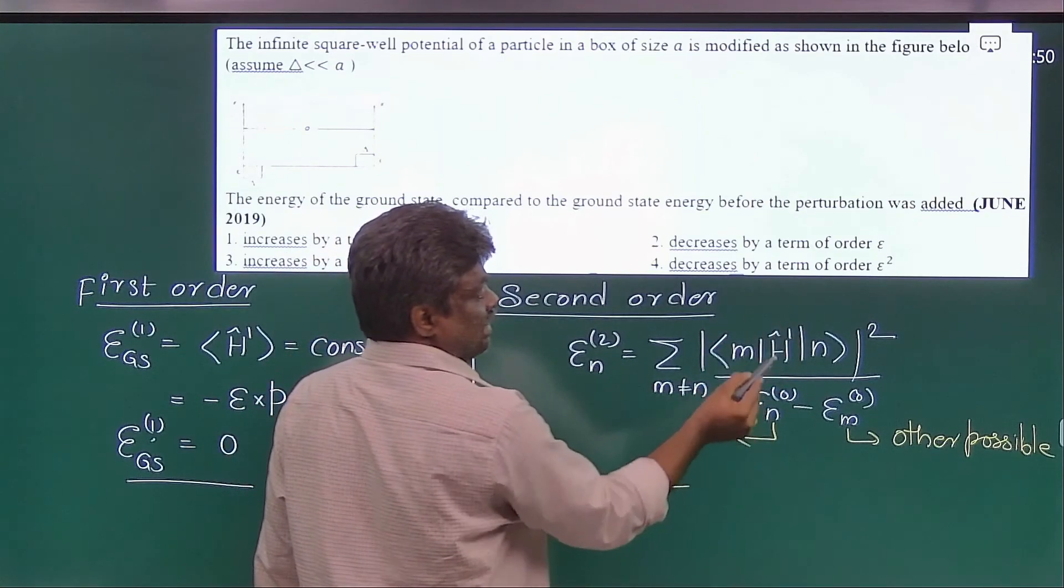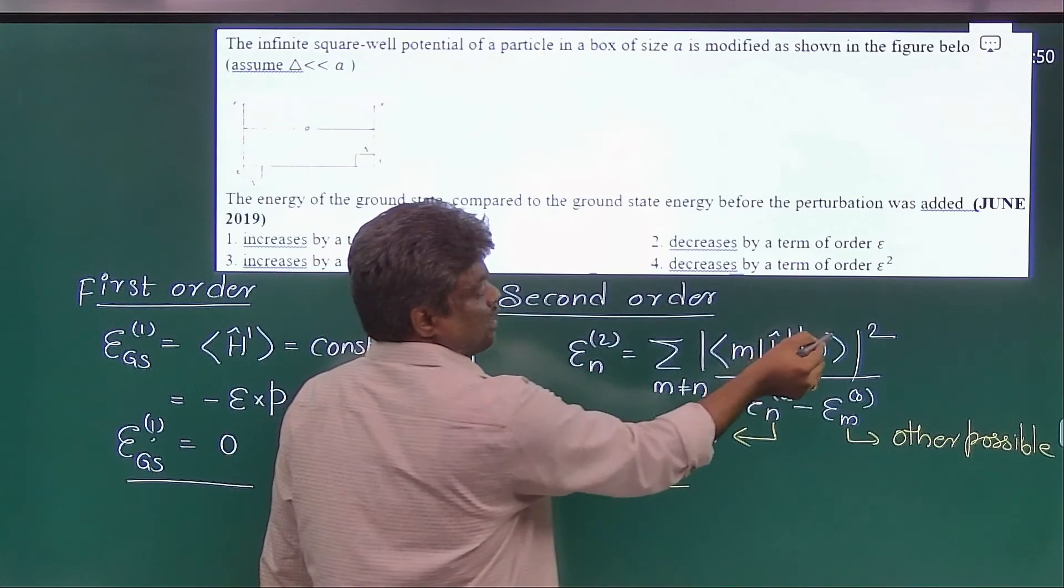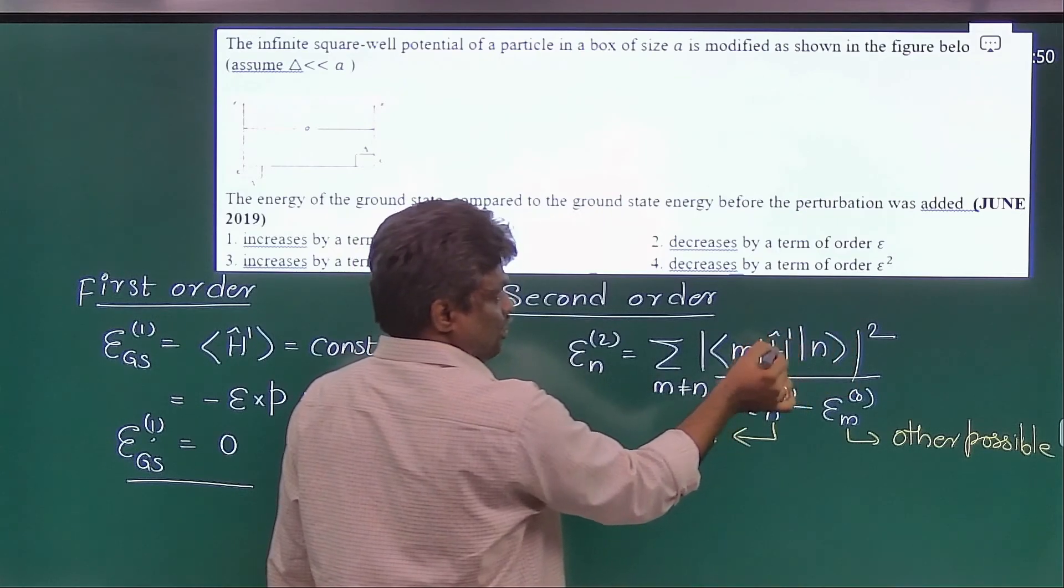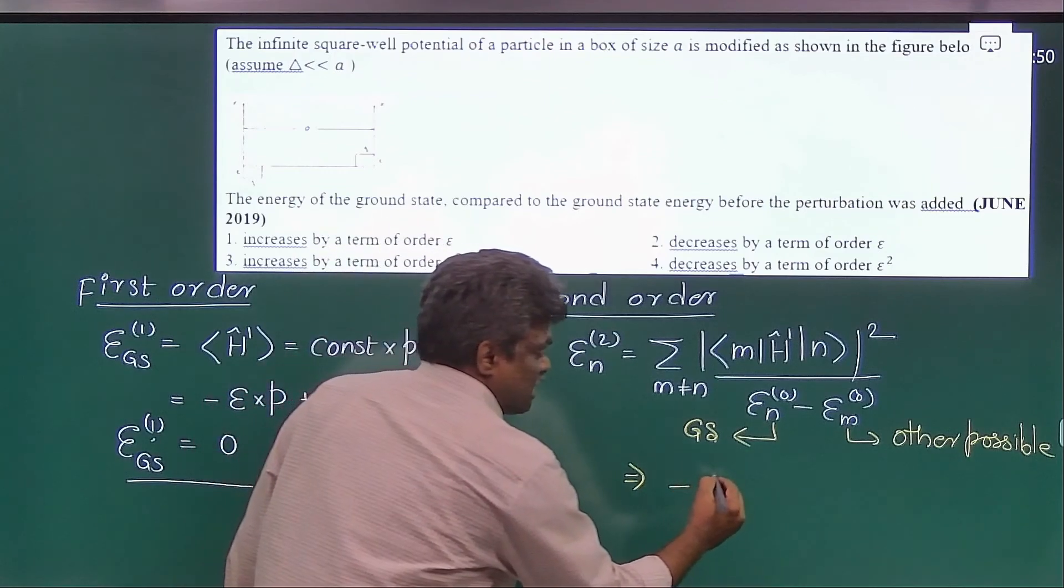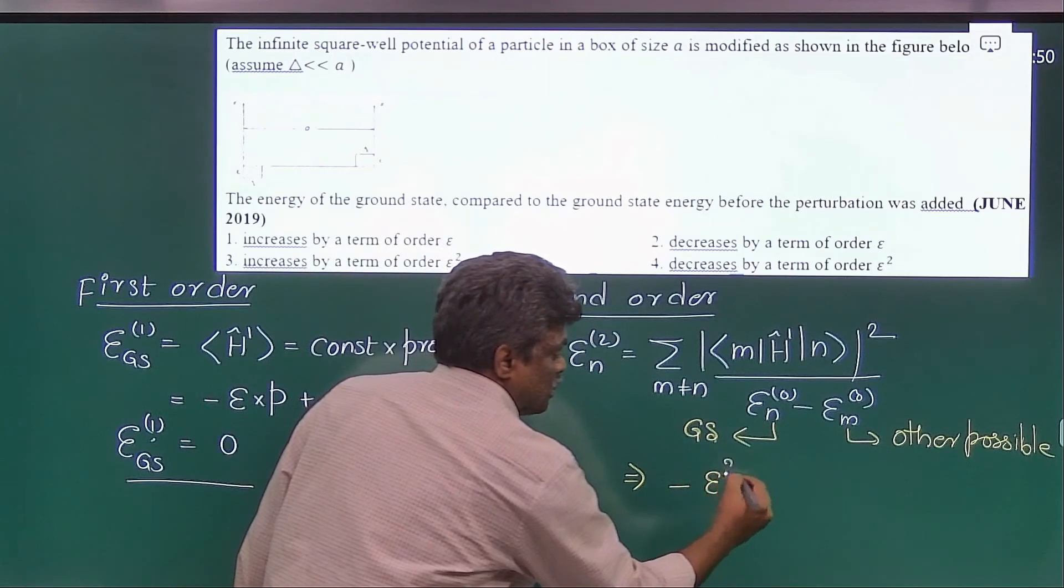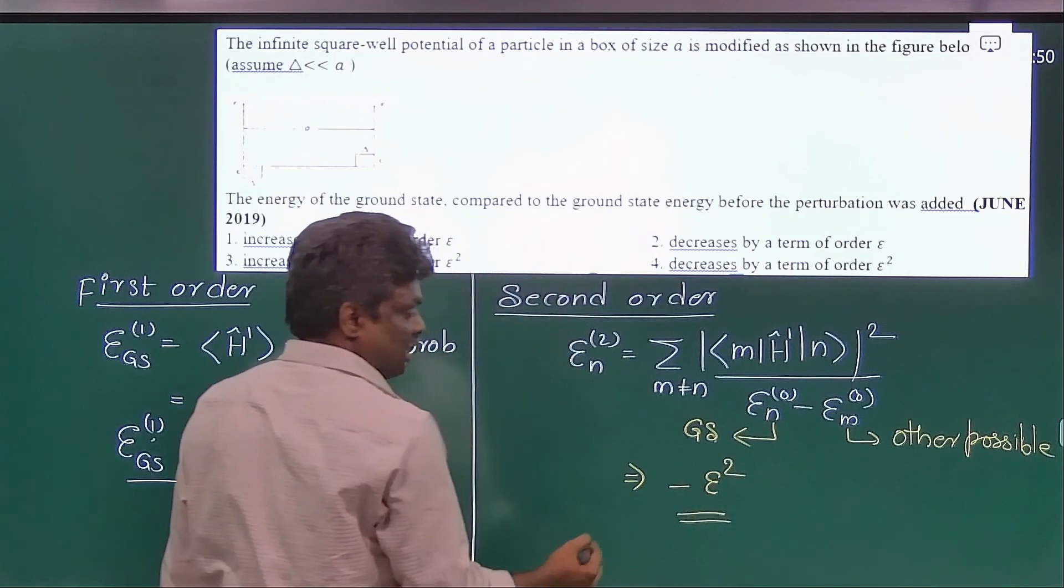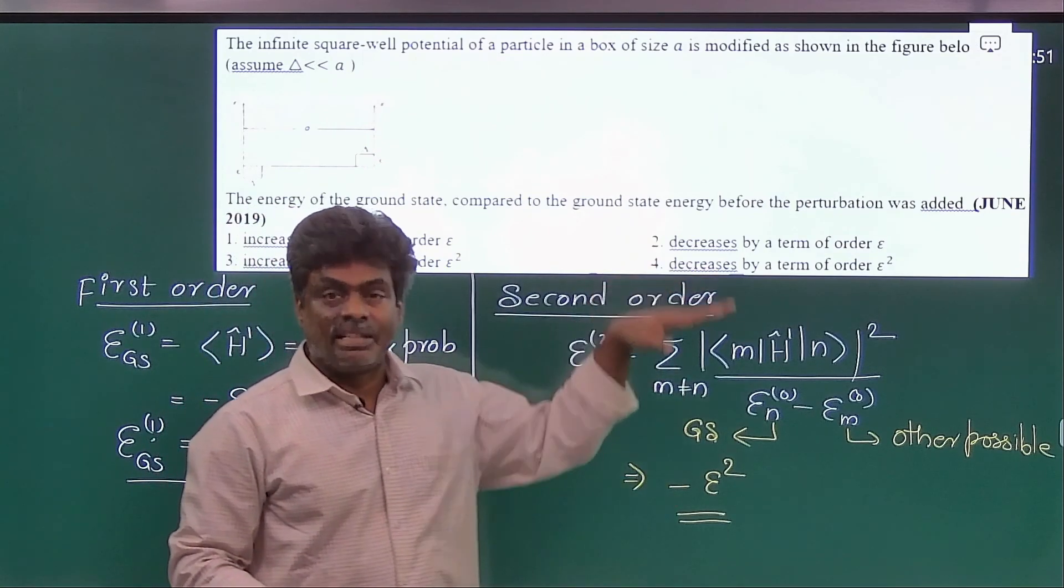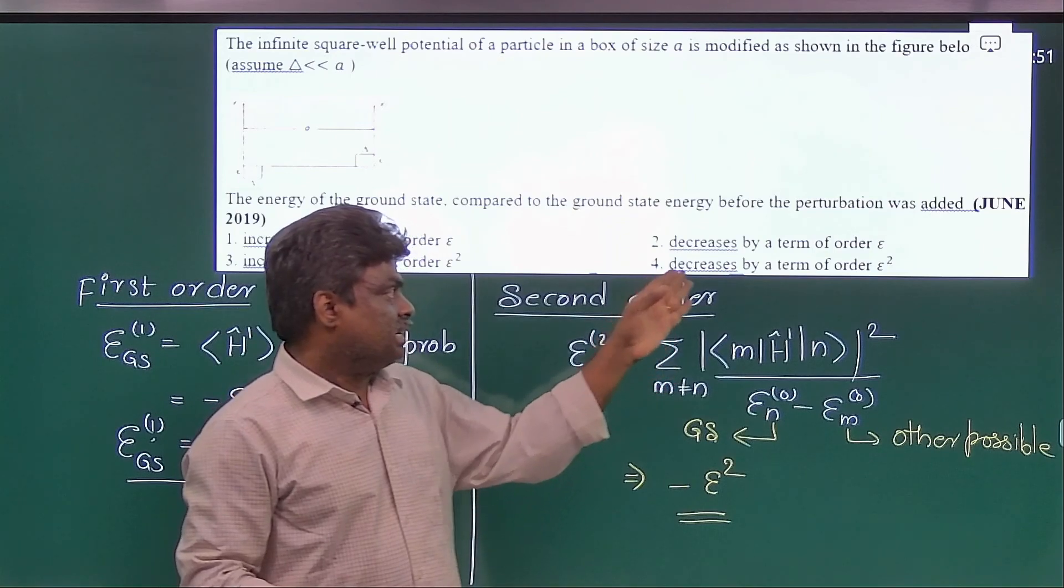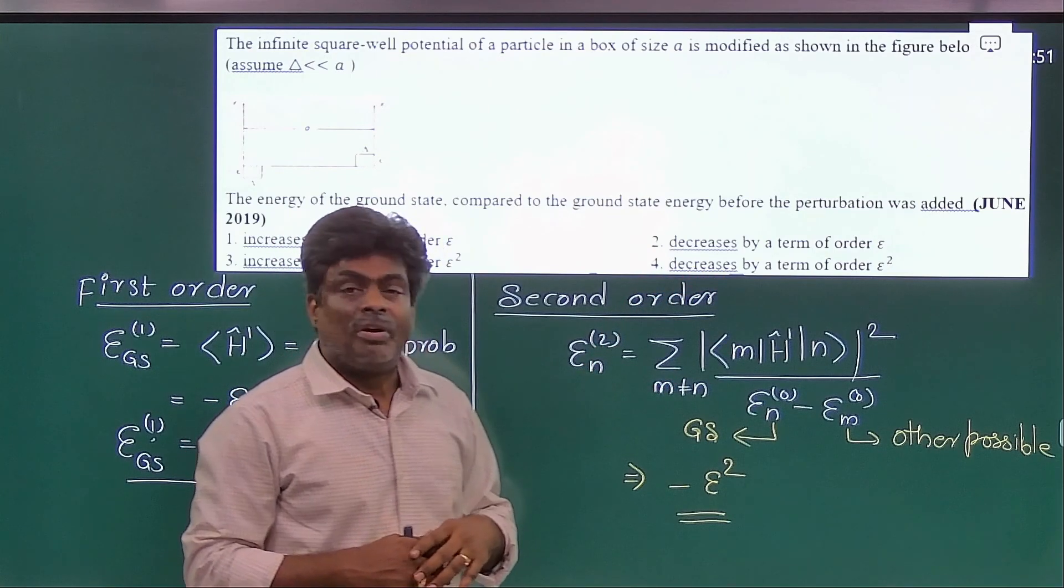And if you see the numerator, this is proportional to H prime. Of course here H prime is a constant and here we have a square. So that's why this is definitely proportional to minus E squared. Okay, so this minus indicates it is decreased. So your answer will be decreased by a term of order E squared.